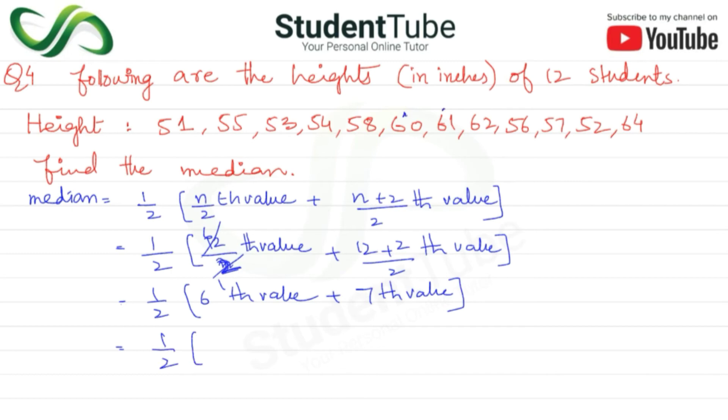So we've found the 6th value and 7th value. To find the median, we always need to remember that the data must be arranged in order.